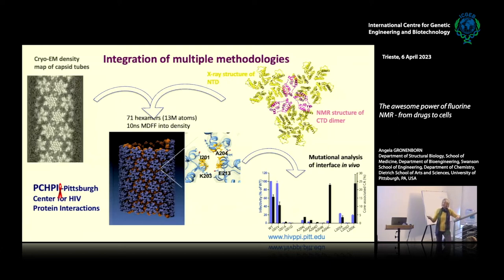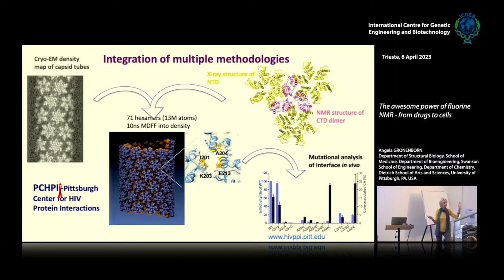We used the X-ray structure of the N-terminal domain, the NMR structure of the C-terminal domain — a dimer that links units together. In the test tube we made a large assembly of the capsid protein and obtained the cryo-EM map of that, then computationally put this all together by molecular dynamics flexible fitting. Once you have those pictures you have to go back and probe in vivo whether a critical interaction, say between isoleucine 201 and alanine 204, is really important — because just seeing it in your structure doesn't make it important. You have to disrupt it and show it matters in vivo.